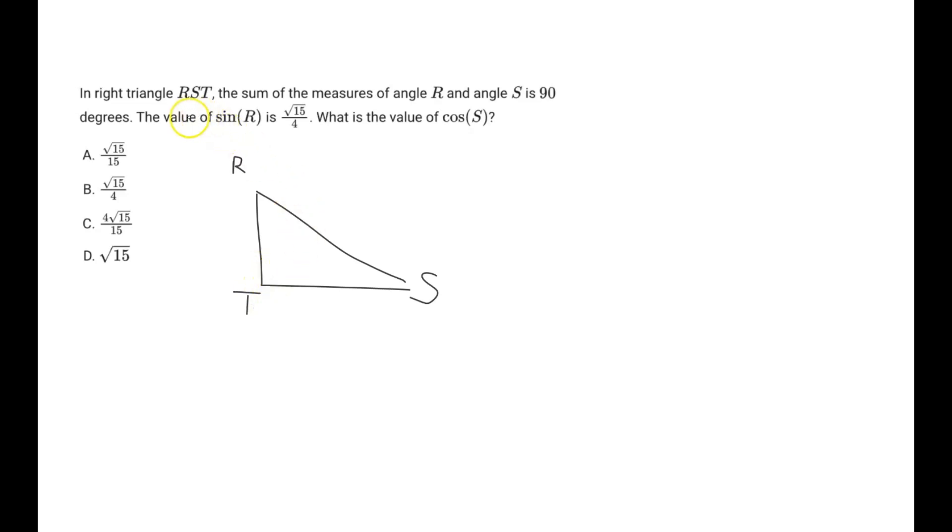All right, so the value of sine R - sine, we know from SOH CAH TOA, is opposite over hypotenuse. Opposite over hypotenuse.